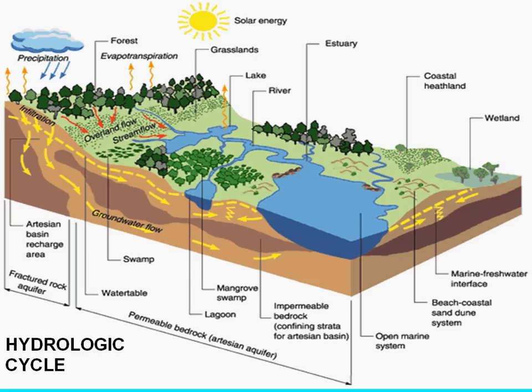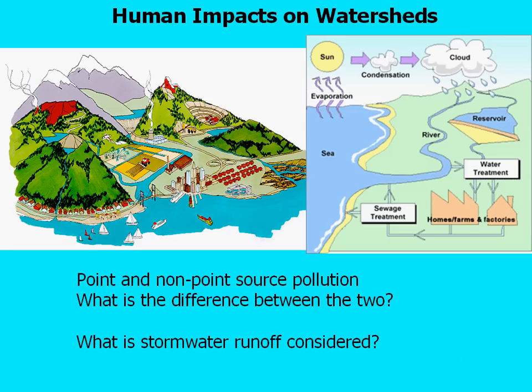There are a number of different human impacts on watersheds that we've affected through various processes — through development and through alteration of streams and hydrologic cycles.